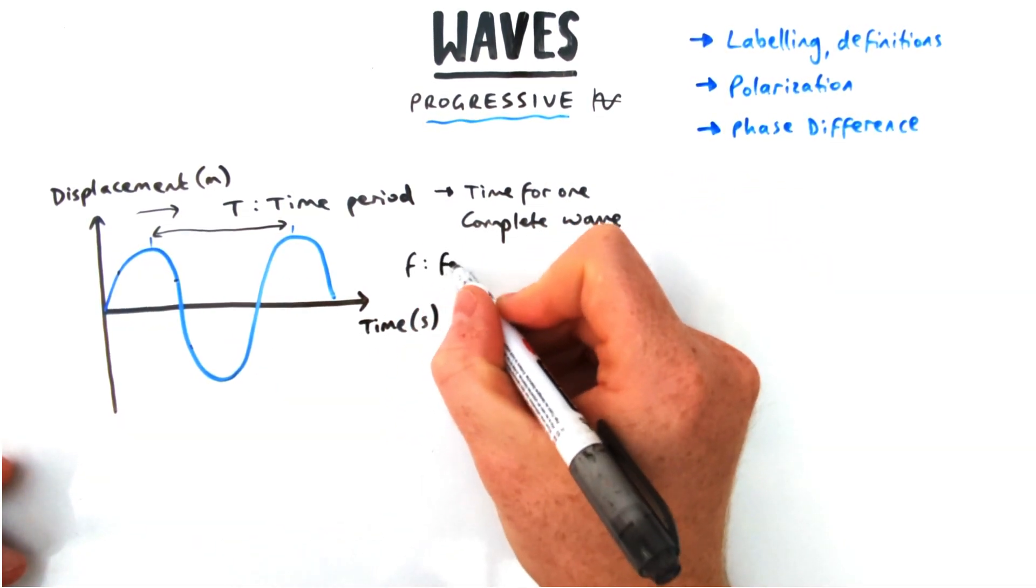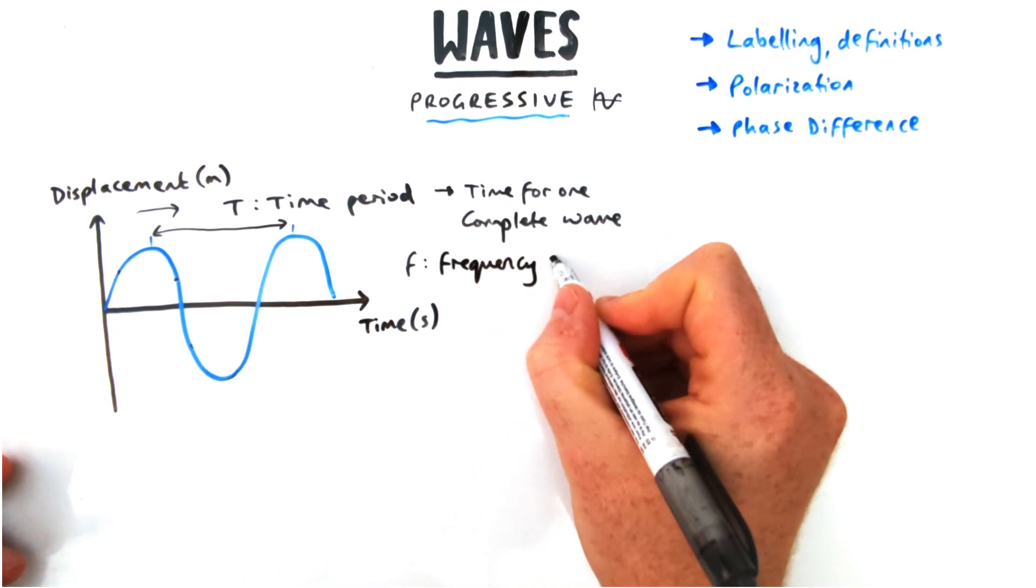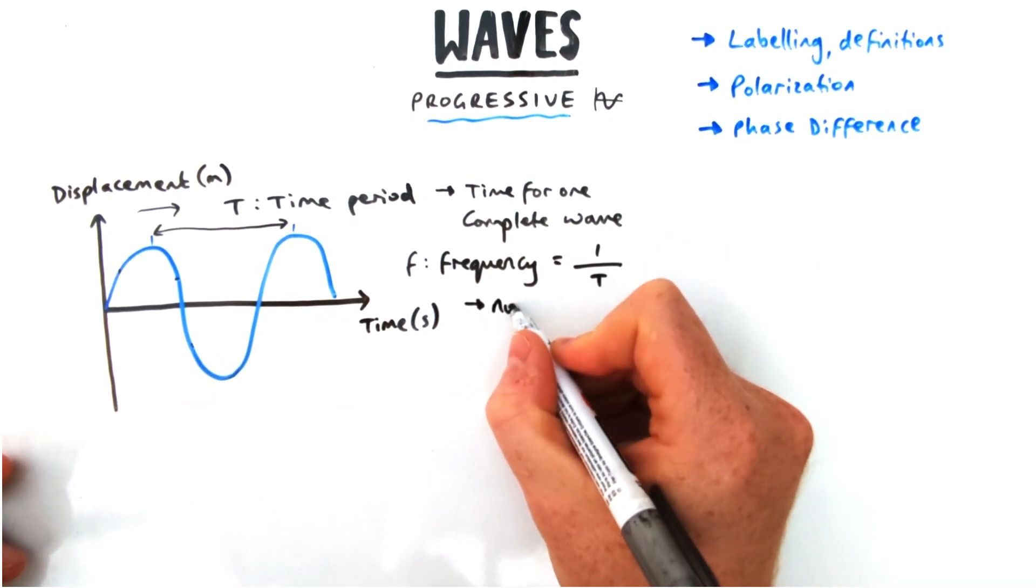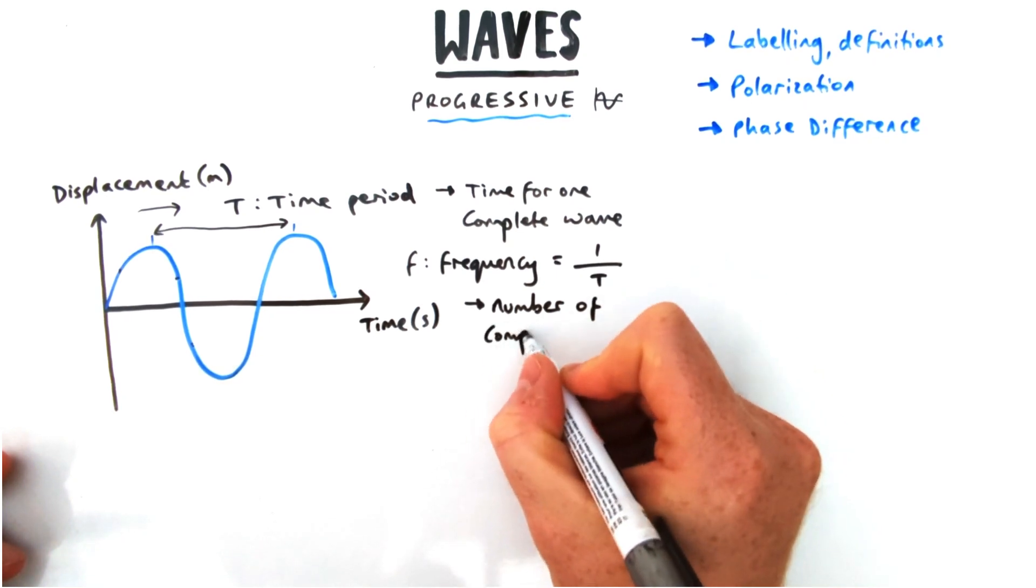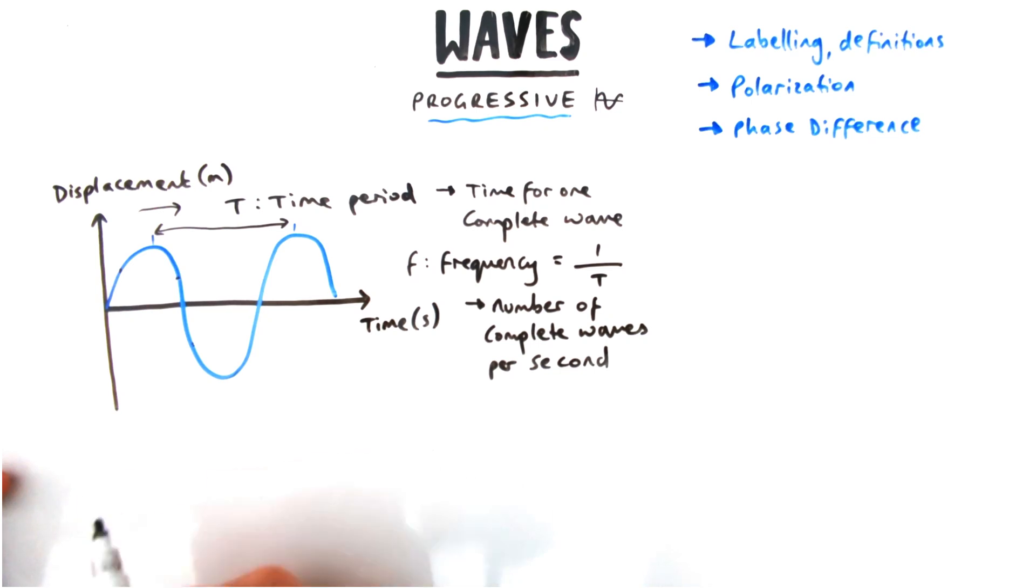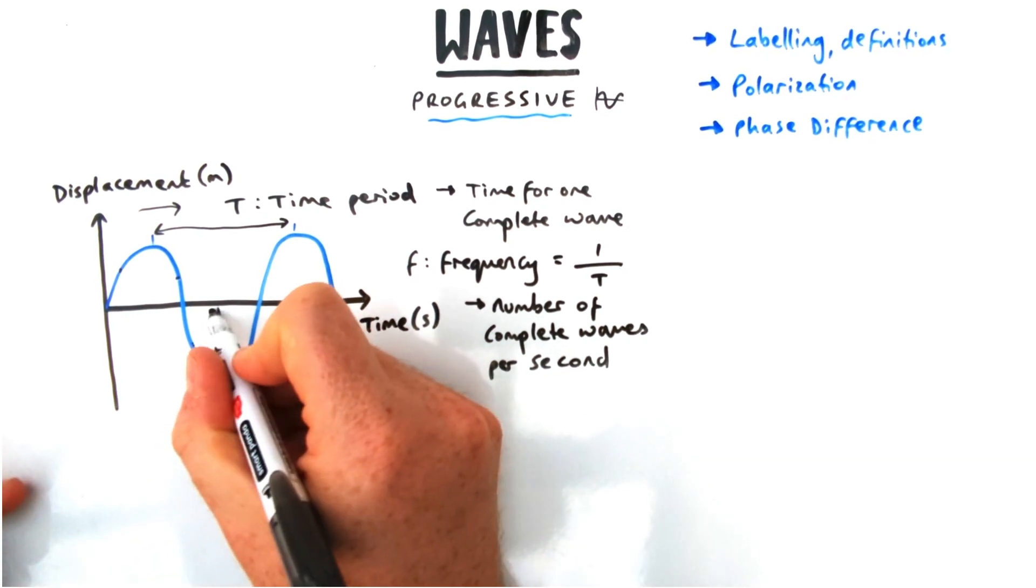Knowing that, we can also use it to define the frequency. The frequency of a wave is given by one divided by the time period. Frequency is the number of waves or number of cycles in one second, and we should know that is measured in hertz or seconds to the minus one.